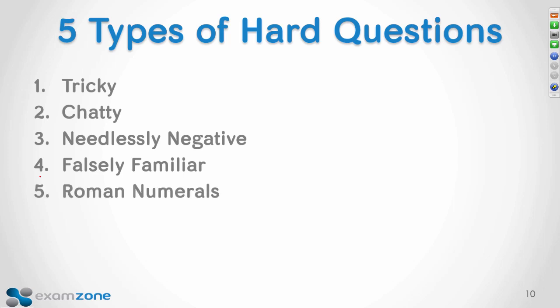Roman numeral questions are usually 'which two of the following are associated with...' with all combinations as answer choices. Roman numerals give a real edge at the testing center — you can say 'it has to be one but not three, so that's C.' Out of the five question types, chatty questions are noticeable because there are tons of numbers; needlessly negative questions have words like 'except' or 'none of'; and Roman numerals are very obvious. But watch out for tricky and falsely familiar — they don't come with labels and require you to slow down.